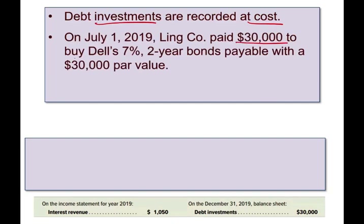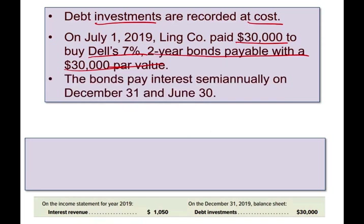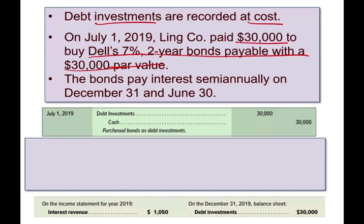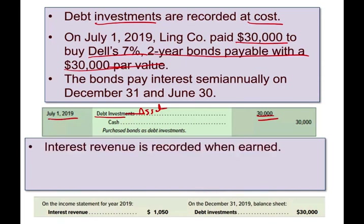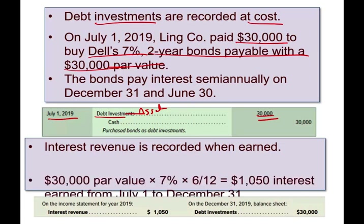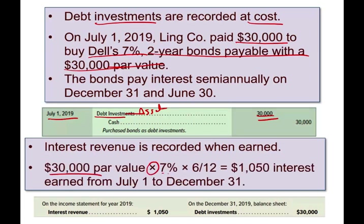Let's assume on July 1st, Ling paid $30,000 to buy Dell's 7% two-year bond with a $30,000 par value. That means we bought the bond for $30,000 and it has a par value of $30,000. The bond pays interest semi-annually on December 31st and June 30th. After six months, we take $30,000 times 7% times one-half, so the interest earned from July through December is $1,050.